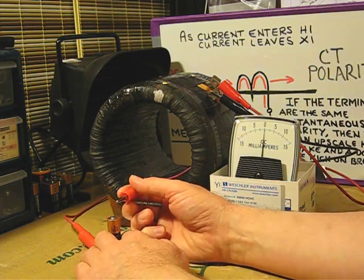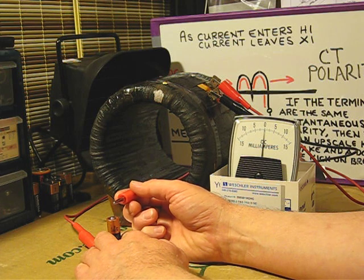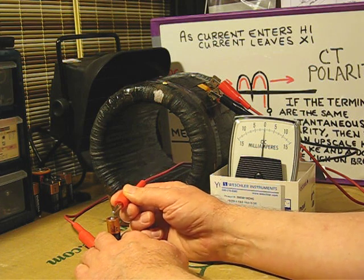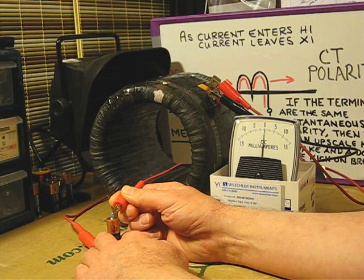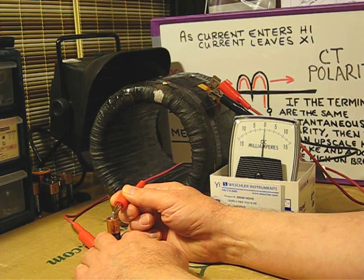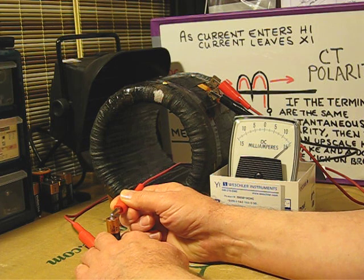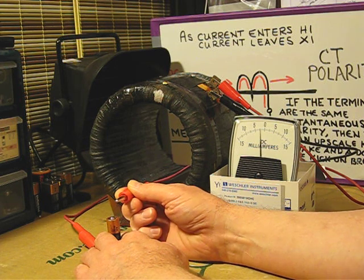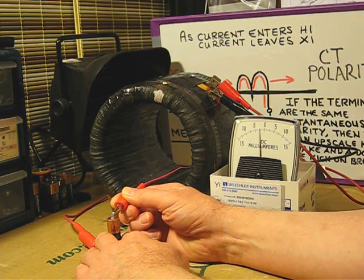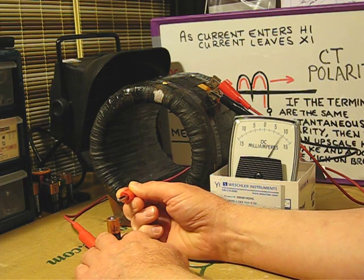Now, since my meter is connected with a positive lead to X1, when I send a positive pulse into H1, I'll see an upscale kick when I make the circuit and a downscale kick when I break the circuit. Upscale on make, downscale on break.